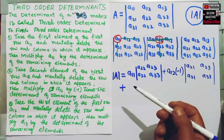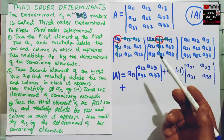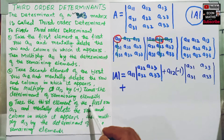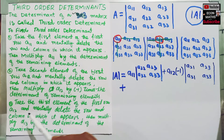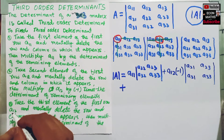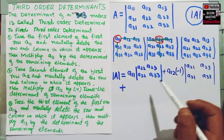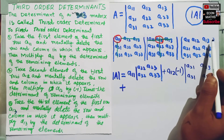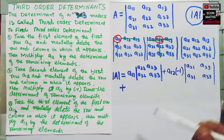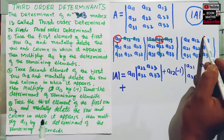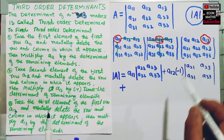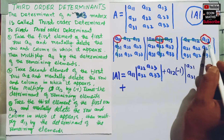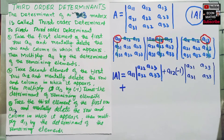Plus, we take the next step. Similarly, we take the third element of the first row, A13, and mentally delete the row and the column in which it appears.